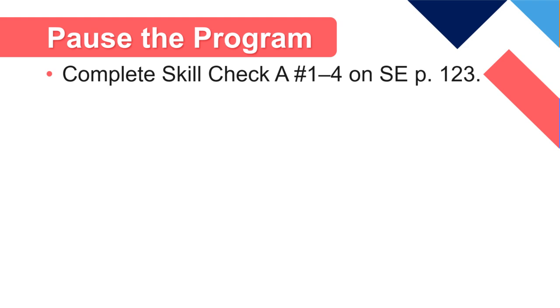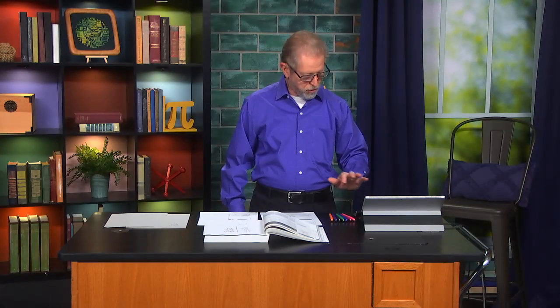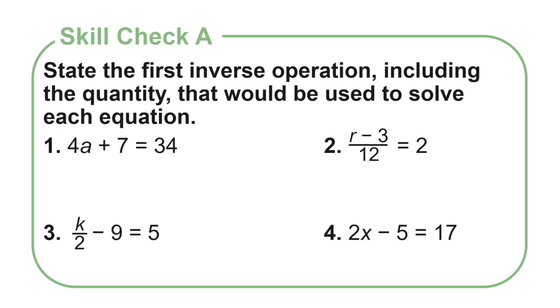Some problems for you to do on skill check A. And when you look at number 1, what is the first inverse operation that you would do to solve this problem? Okay. And actually, you're going to subtract 7. Now, if you said divide by 4, I'll explain to you why this is wrong. On number 2, you would multiply by 12, not add 3. On number 3, you would add 9, not multiply by 2. On number 4, you would add 5, not divide by 2.